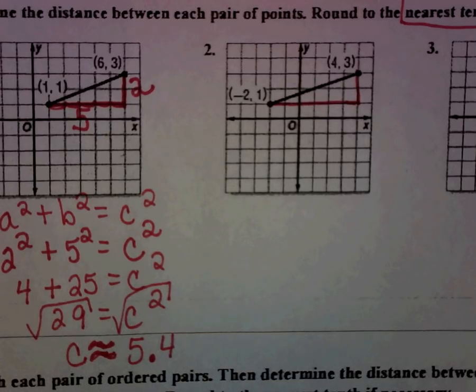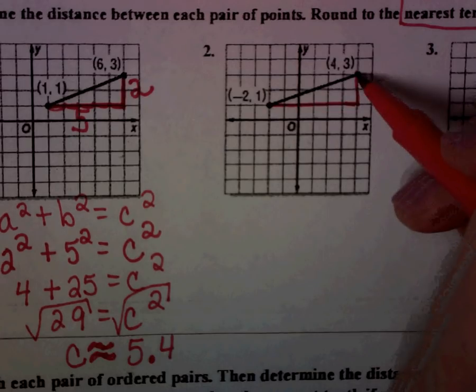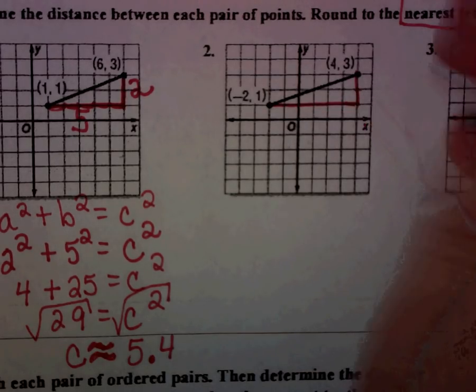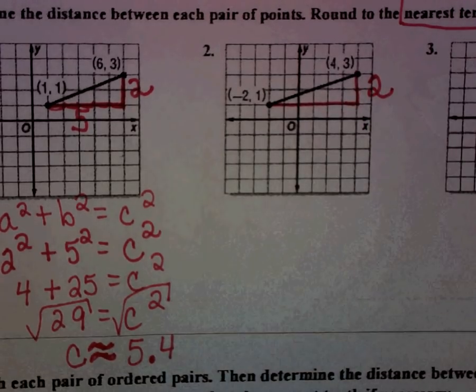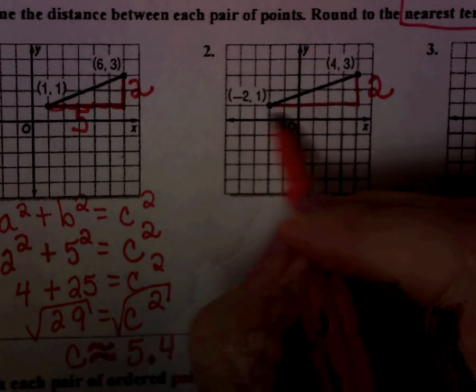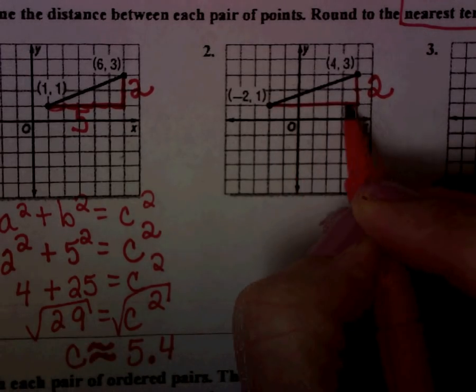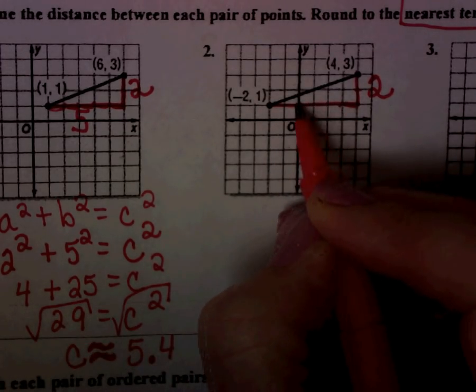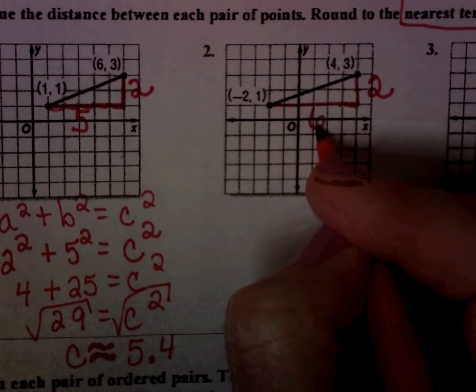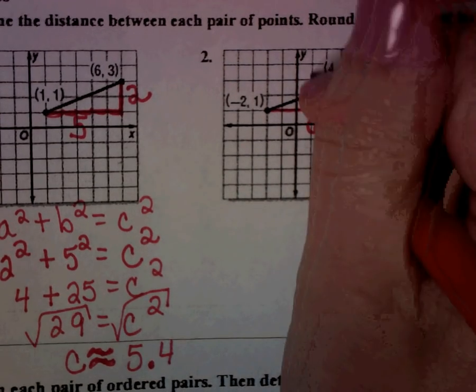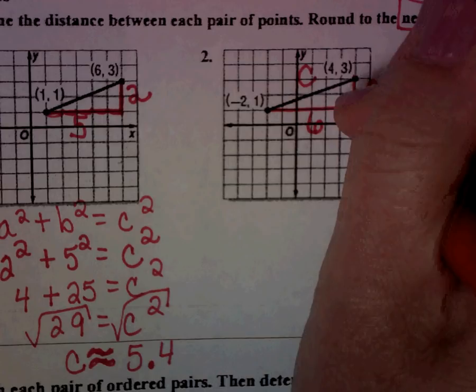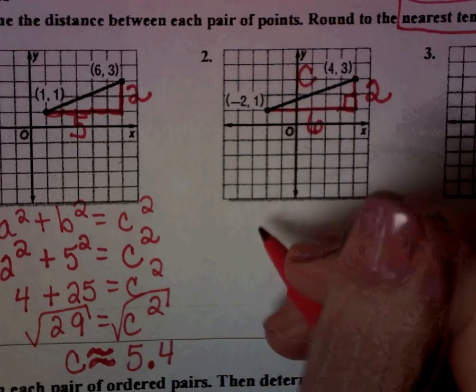Our right triangle should look like this. And then again, we're just counting our units. Our A value would again be 2. Our B value would be 1, 2, 3, 4, 5, 6. And again, we're just looking for our C value. Here is our right angle. We're looking for our C value.